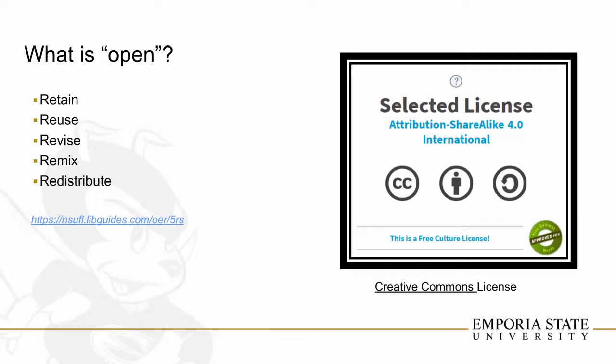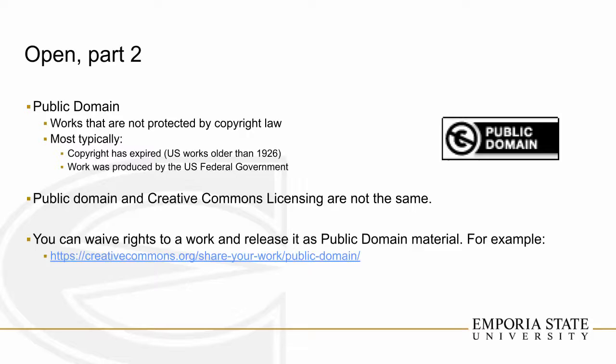The right to redistribute means you can give the resource or the new thing you've created to other people without a cost — and this could include the right to commercial uses. Open also includes works in the public domain, which are not protected by copyright law, typically because copyright has expired or the work was produced by the federal government. Material from the FDA, the NIH, or the Department of Education can be used as you wish without attributing the creator, because as taxpayers our money has paid for its creation — it already belongs to all of us.